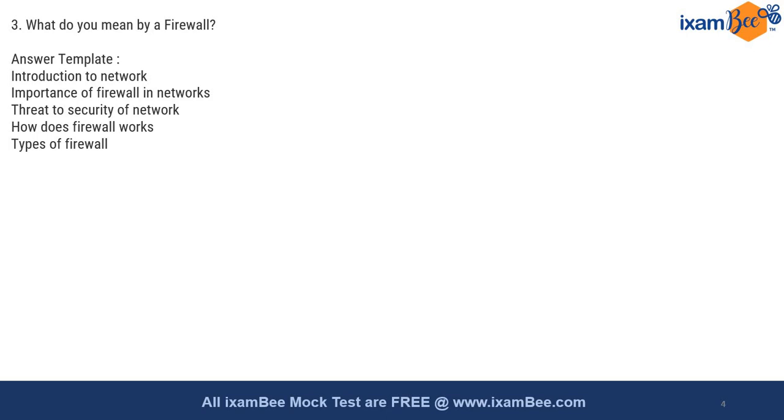First make sure that you give a good introduction about networks. Then explain the importance of firewall in networks along with the definition. Then give the threat to security of network which will happen if firewall is not there. Then how will firewall work and protect us? How the intrusion detection system and intrusion prevention system are in sync with the firewall? Then give examples of types of firewall and draw a conclusion. Again, the word limit should be minimum 300 here.